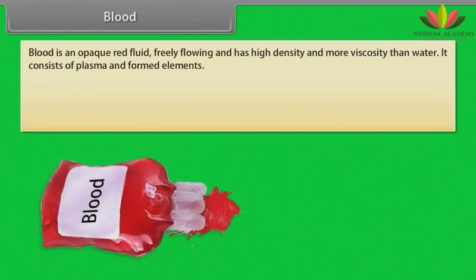Blood is an opaque red fluid, freely flowing, and has high density and more viscosity than water. It consists of plasma and formed elements.